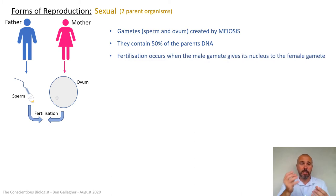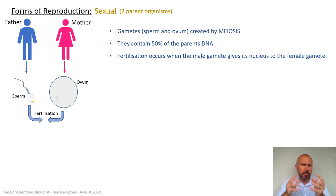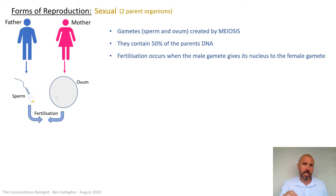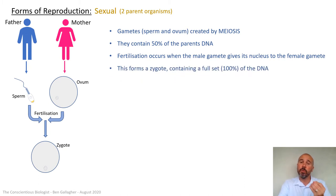In humans, the sperm are released at the cervix, at the back of the vagina, so they can swim through the cervix, through the uterus, down the fallopian tube to fertilize the egg. But that's just in humans — there are loads of other mechanisms by which fertilization takes place. We'll look at some of those briefly on another slide. The nuclei need to fuse together, and that will give you a zygote.